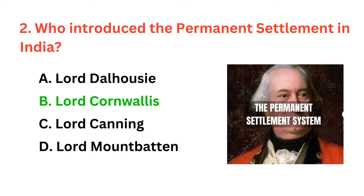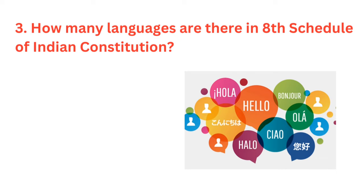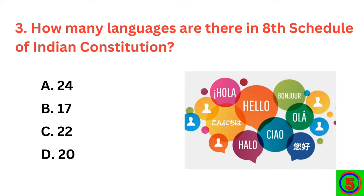How many languages are there in the 8th Schedule of the Indian Constitution? The correct answer is option C: 22.